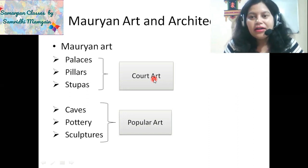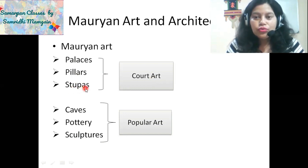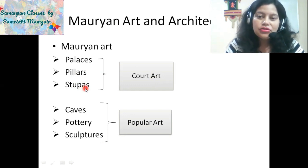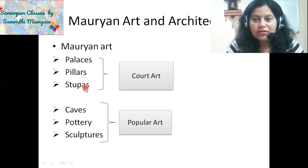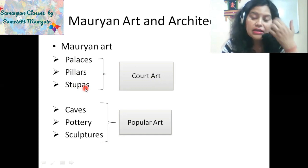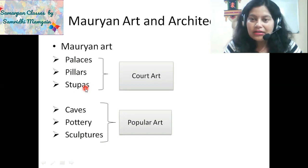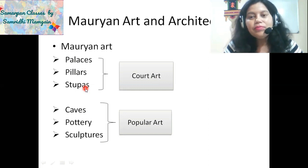Under Mauryan art and architecture, we will mostly study Buddhist architecture in the form of pillars and stupas. The main ruler who built a lot of pillars was Ashoka. Ashoka was inspired by the Achaemenid pillars — the art of pillar making already existed in the Persian Empire. During his reign, similar pillars were built in India.